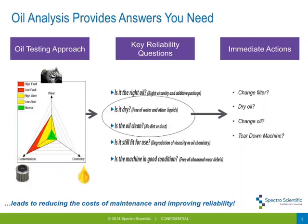Oil analysis provides a huge amount of data — on any typical oil analysis report from a lab, you can get anywhere from 30 to 60 individual data points, depending on what type of testing you're doing. But what you're really trying to do with all that data is answer a couple of key reliability questions. From an oil analysis perspective, those questions are: Have I got the right oil present? Is it dry? Is it clean? Is it still fit for further use? And is the machine in okay condition — do I need to do anything?